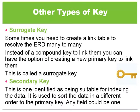Another type of key that you could use is something called a secondary key. This is a key that is used for indexing data, which means it can sort data in a different order to the primary key. We can use any of the field names in any of the tables to create one, but we would call this a secondary key.